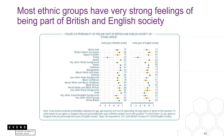On the theme of belonging, most ethnic groups have very strong feelings of being part of British and English society. This chart shows the probability of feeling part of British society in the left panel and English society in the right panel, with white British included at the bottom row. Most people, no matter their ethnic group, feel a strong part of society, with the exception of the Roma population.